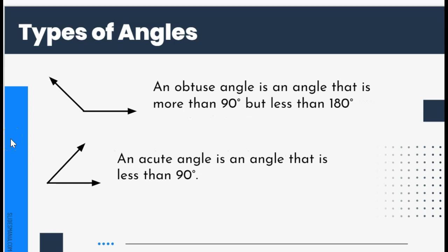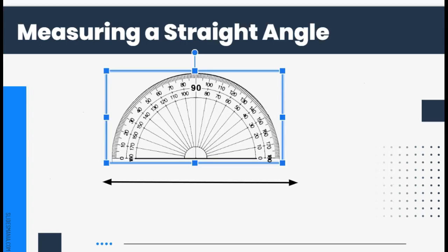An obtuse angle is an angle that is more than 90 degrees but less than 180 degrees. An acute angle is an angle that is less than 90 degrees.